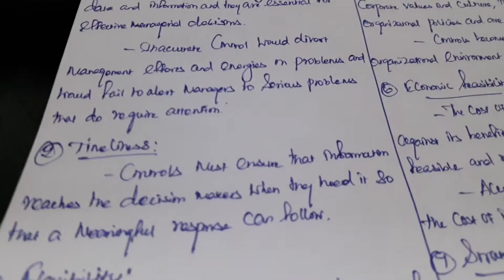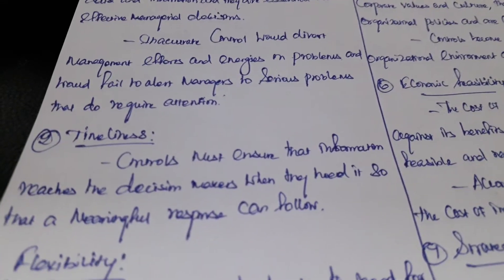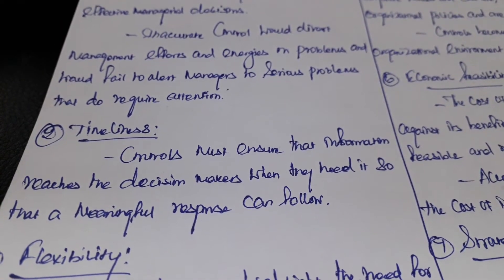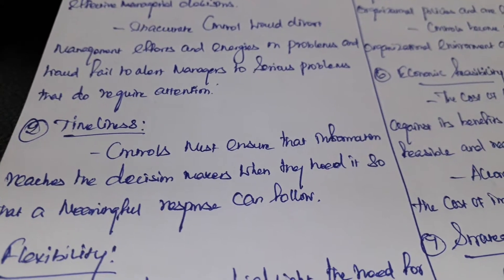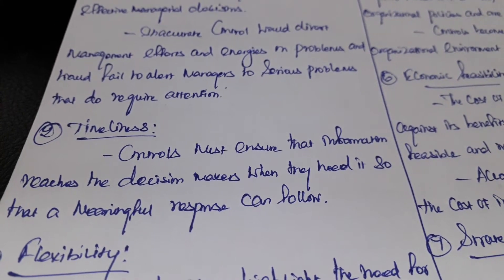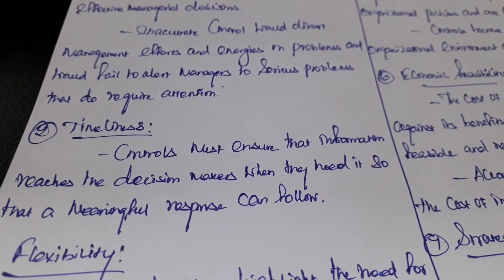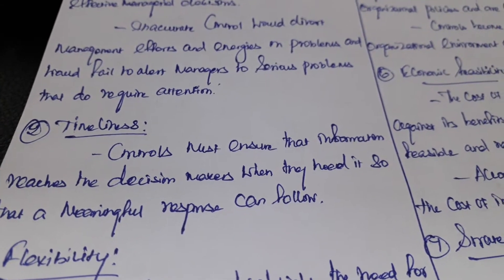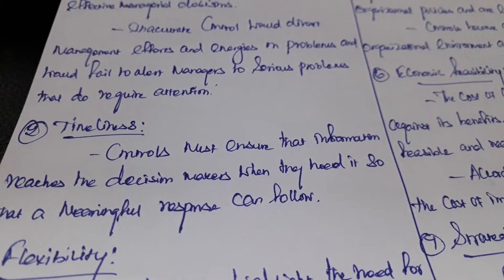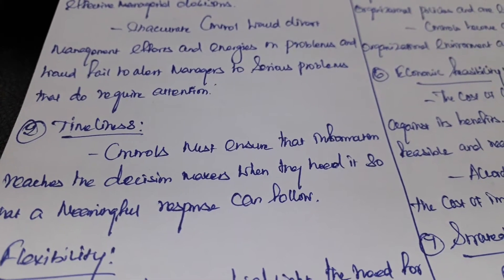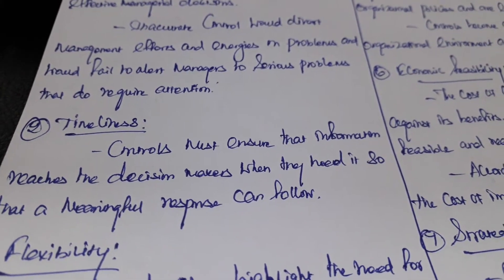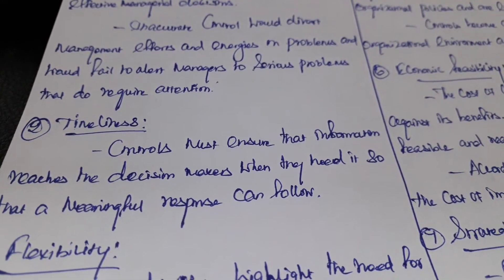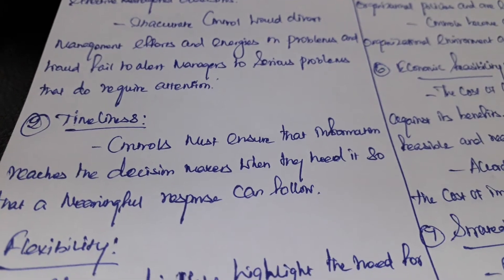Next is timeliness. Controls must ensure that information reaches the decision-makers when they need it, so that a meaningful response can follow. Controls must ensure that decisions will be made with a meaningful response.